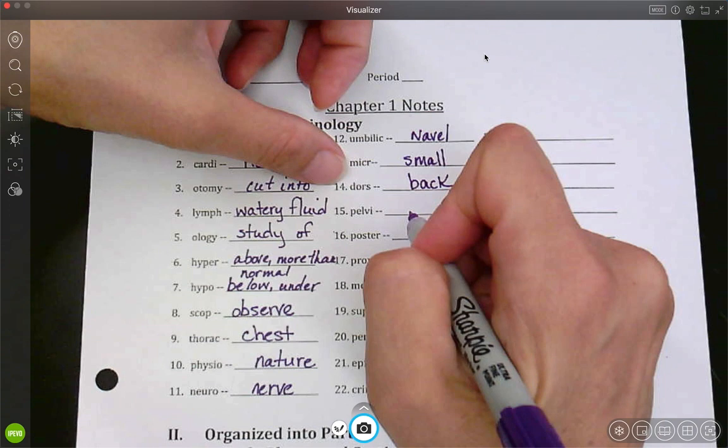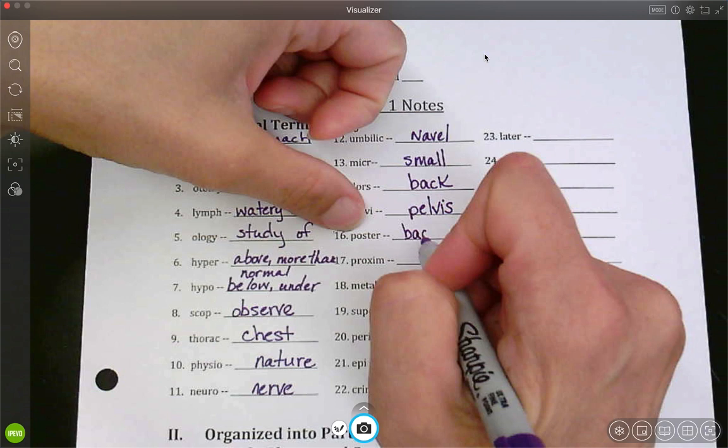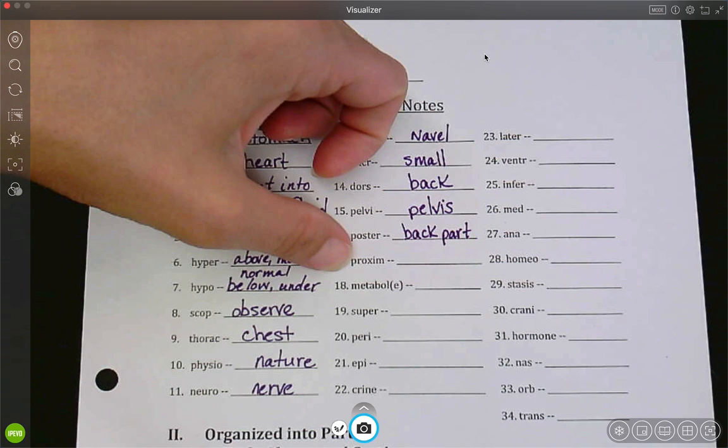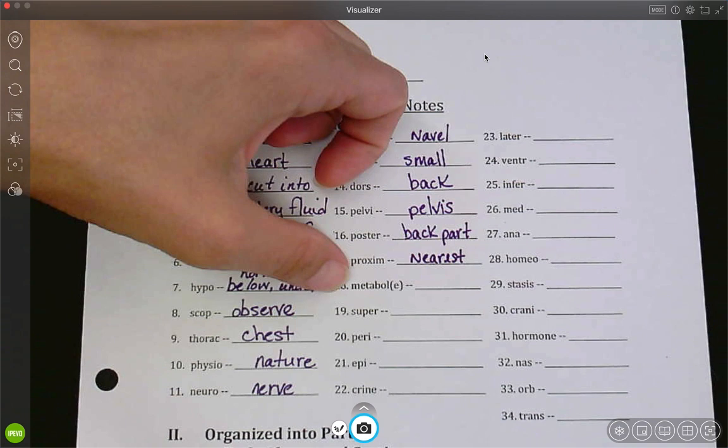Pelvi. That one's pretty easy. Pelvis. Just add an S. Poster. Posterior. So that's a directional term. So that would be back part. Proxim. Approximate. So the word is nearest. So it's the nearest. And we'll use that again as a directional term.